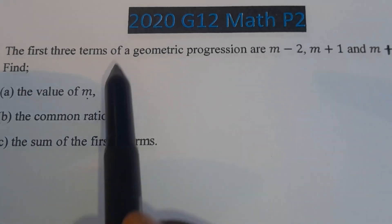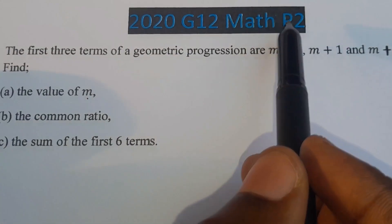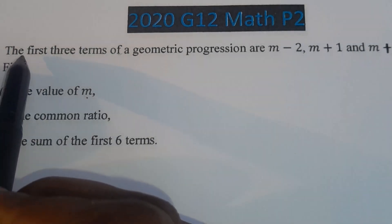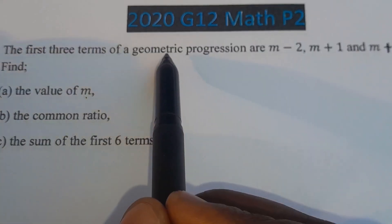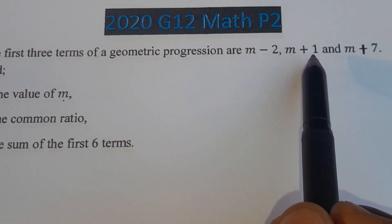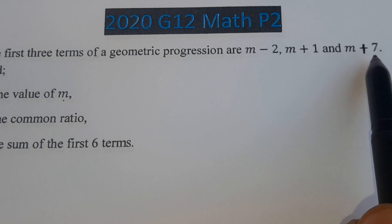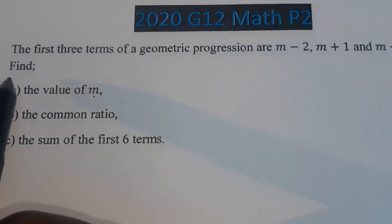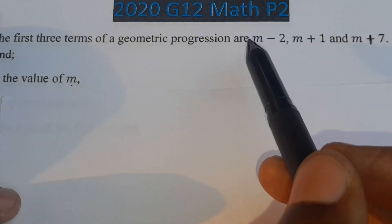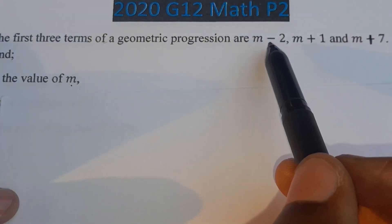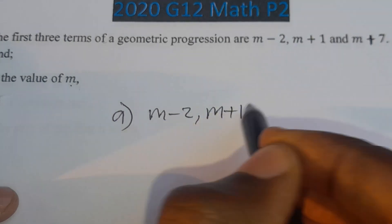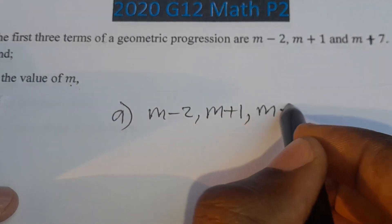In this video, we are going to look at the 2020 grade 12 mathematics paper 2 based on geometric progressions. The information we have says the first three terms of a geometric progression are m minus 2, m plus 1, and m plus 7.